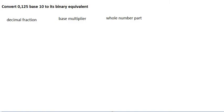So let's convert 0.125 in base 10 to its binary equivalent. First of all we write the decimal number, that's 0.125, and then we multiply it by the base that is base 2. We get our answer here is 0.25.